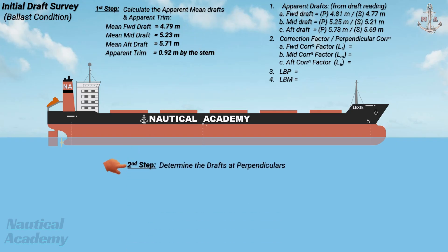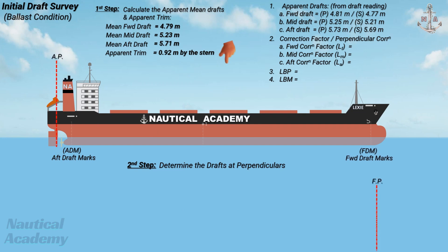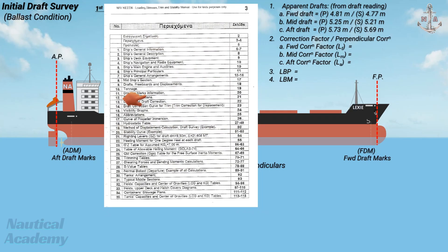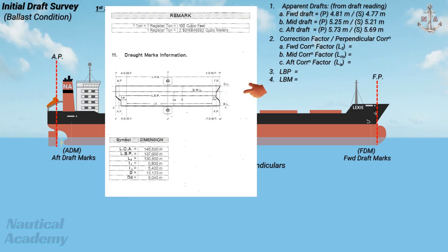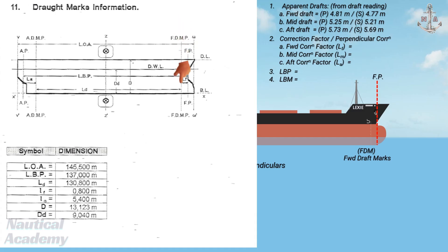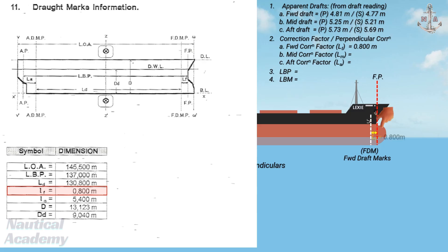After calculating the apparent mean drafts forward, midship, and aft, including the apparent trim, the next step is to determine the drafts at the perpendiculars. Remember that in most vessels, the forward and aft draft marks are not positioned exactly at the perpendiculars. To confirm, refer to the ship's stability booklet. Go to the Table of Contents and look for the section on draft marks information. From the diagram, the forward draft marks are located 0.800 meters from the forward perpendicular — this distance L sub f is known as the forward correction factor.